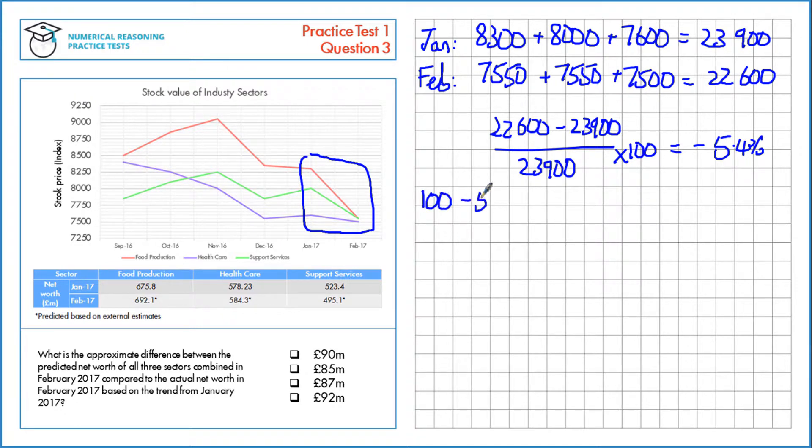As a multiplier, that's 100% minus 5.4%, which leaves us with 94.6%, equivalent to 0.946 as a multiplier.